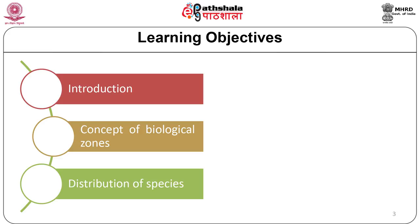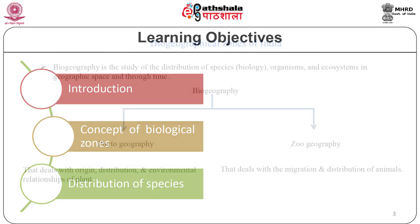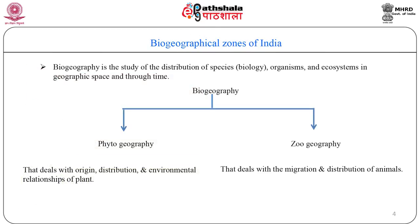In this module we are going to study about the concept of biogeographical zones of India and the distribution of its species. Biogeography is the study of the distribution of species — biology, organisms and ecosystems — in geographic space and through time. Biogeography is divided into two parts: phytogeography, that deals with origin, distribution and environmental relationships of plants, and zoogeography, that deals with the migration and distribution of animals.